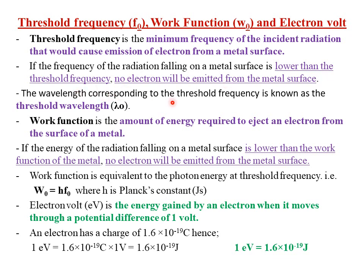The wavelength corresponding to the threshold frequency is known as the threshold wavelength, denoted by λ₀. We can define threshold wavelength as the minimum wavelength of the incident radiation that would cause emission of electrons from a metal surface. If the wavelength of the incident radiation is lower than the threshold wavelength, then we don't expect any photoelectric emission to take place. Photoelectric emission can only take place if the incident radiation has a frequency equal to or greater than the threshold frequency.